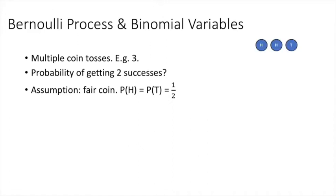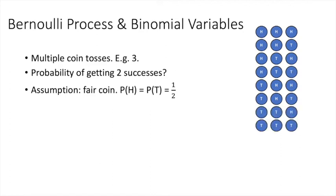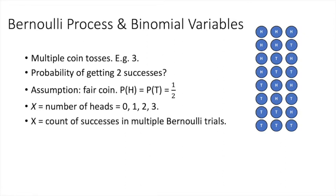Now two heads may appear in the sequence head, head, tail. But because it is a fair coin, other sequences are likely — that is, we can see tail, head, head, or head, tail, head. In each case, the number of heads equals two. As you can guess, it is not necessary that only two heads will appear all the time. In fact, the number of heads can be as small as zero or as big as three. Notice, our interest this time is not in individual heads or tails, but the total number of heads in a Bernoulli process — that is, n Bernoulli trials where n equals three.